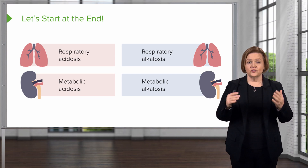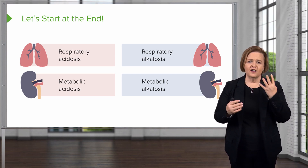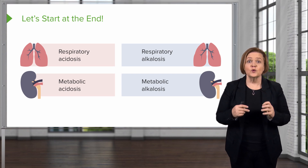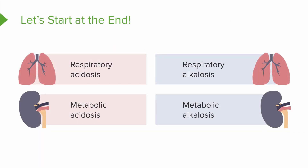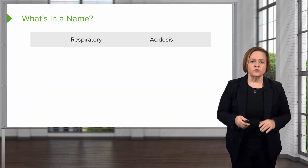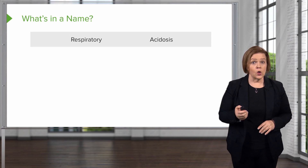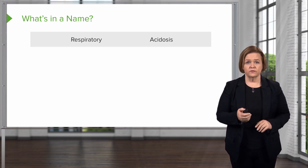Now we're going to start at the end. The end product of where your patient is is one of four places, just like your favorite multiple choice test. We either have respiratory acidosis or metabolic acidosis. You have respiratory alkalosis or metabolic alkalosis. Just knowing those names, we can see all kinds of things about your patient. So let's take a look at the name and see what's involved.